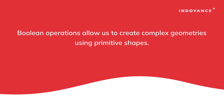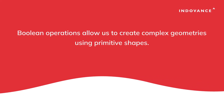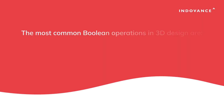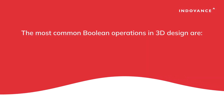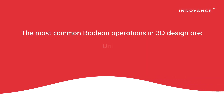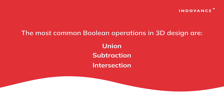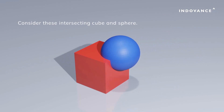Boolean operations allow us to create complex geometries using primitive shapes. The most common Boolean operations in 3D design are union, subtraction, and intersection. Consider these intersecting cube and sphere.